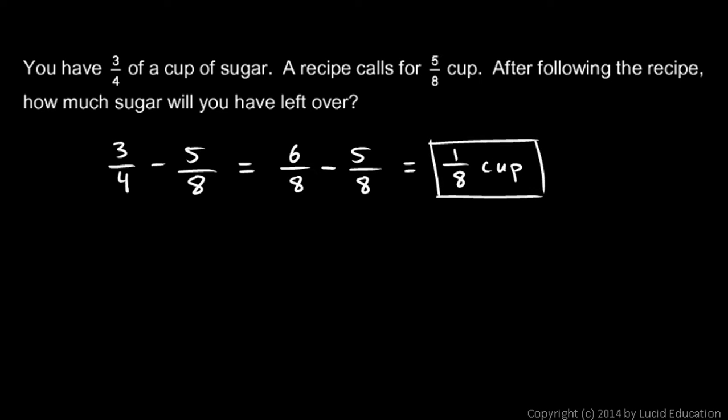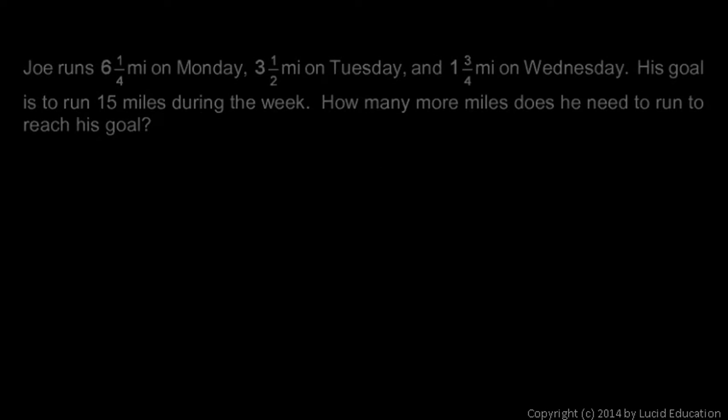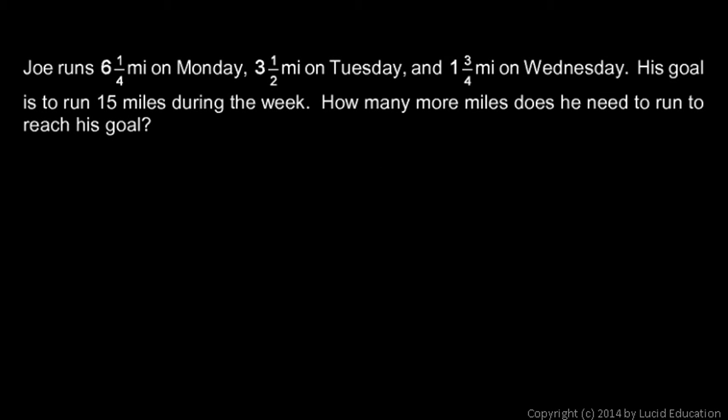In this problem we're told that Joe runs six and a quarter miles on Monday, three and a half miles on Tuesday, and one and three-quarter miles on Wednesday. His goal is to run 15 miles during the week, so how many more miles does he need to run to reach his goal?